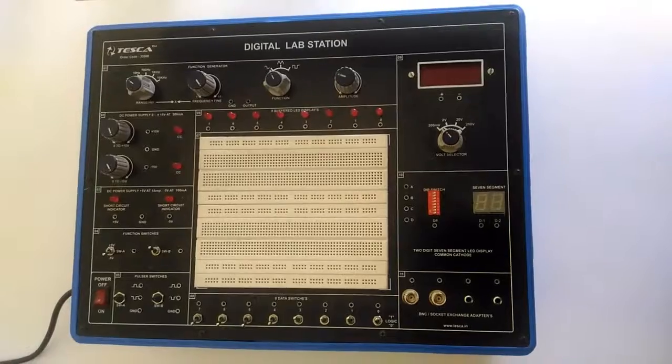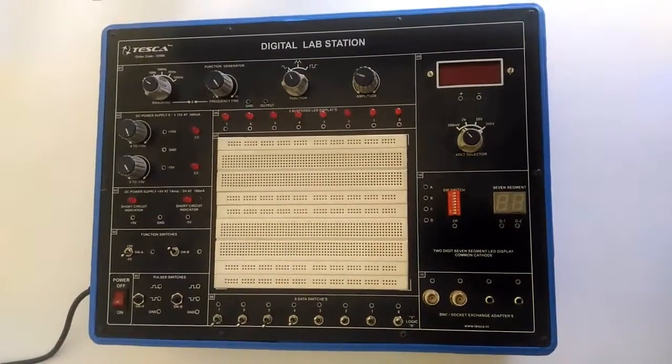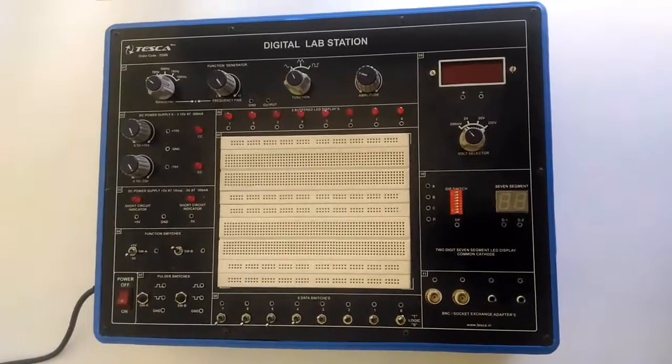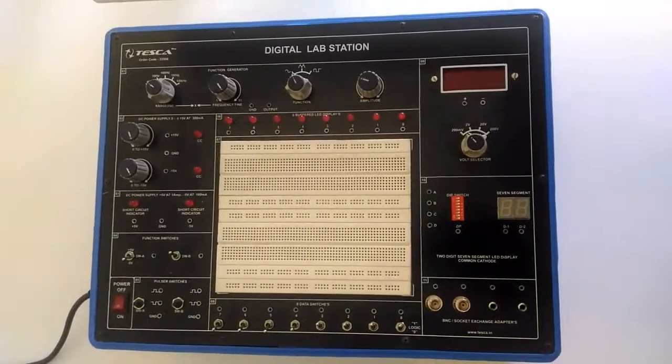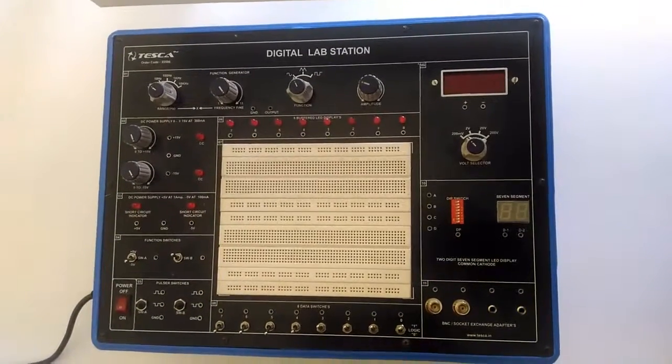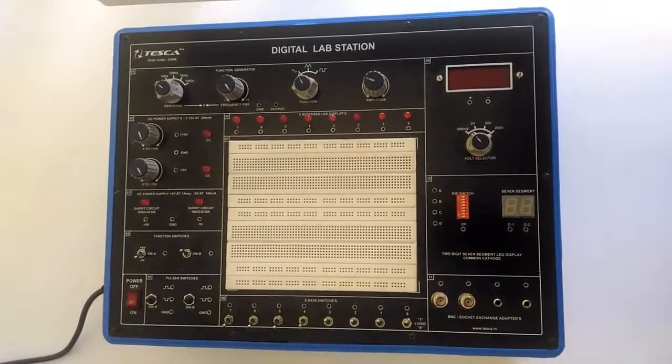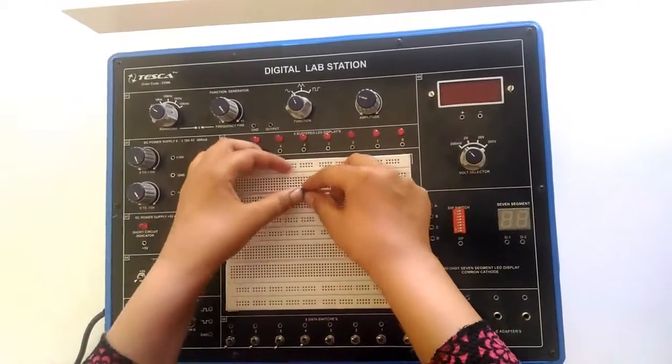Moving on to the experiment procedure of the Digital Lab Station. Firstly, I am starting with how to perform different logic gates using this Digital Lab Station. For this purpose, I am taking the OR gate IC that is 7432 and I am inserting this IC in the pins of the breadboard like this.